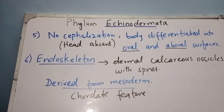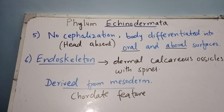Echinoderms have an internal skeleton made of dermal calcareous ossicles with spines. Calcareous means the ossicles are made from calcium salts. This endoskeleton is derived from mesoderm, which is a chordate feature. Just as chordates have bones and cartilage derived from mesoderm, echinoderms share this feature — their endoskeleton derived from mesoderm.